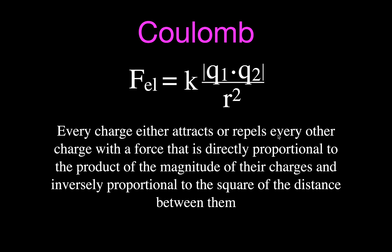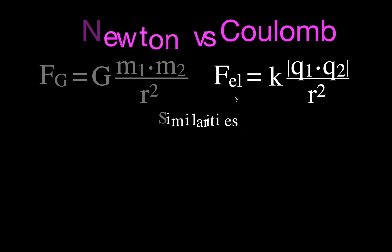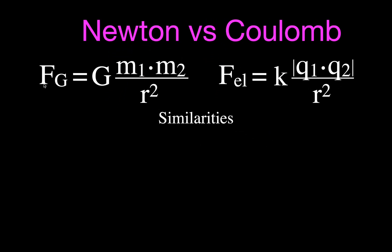Every charge attracts or repels every other charge with a force directly proportional to the product of the magnitude of their charges — just like for Newton's law — and inversely proportional to the square of the distance between them. When you have those two laws side by side, you notice they look very similar: force of gravity and electric force, each with a constant, the product of the two masses versus the product of the two charges, and in both cases divided by the square of the distance. We take the magnitude of the charges — we do not put signs in.